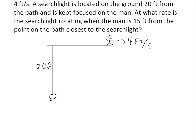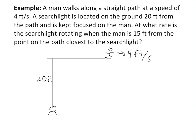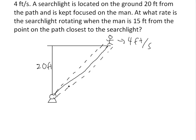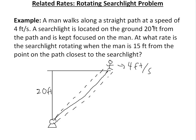So now we're going to have a searchlight — I'll draw this out, it'll look something like this. And now it's focused on the man, so let's draw something like this on him. Basically, the center is what we're thinking about, so it's going to be like that — just assume it's a straight line. It's saying at what rate is the searchlight rotating when the man is 15 feet from the point of the path closest to the searchlight. Basically, the closest path is the perpendicular one, and this 15 feet is over here.